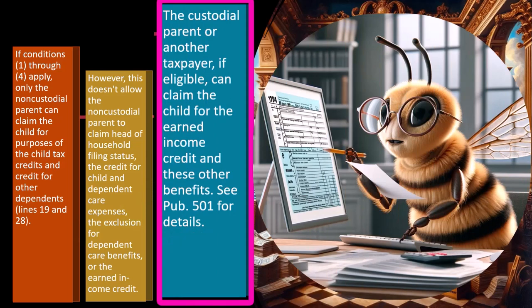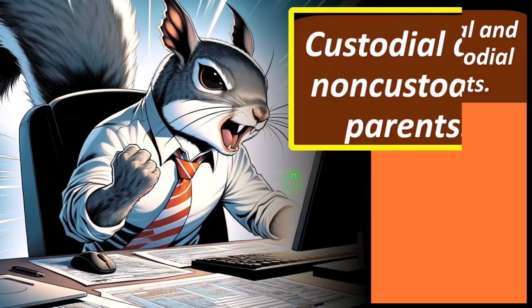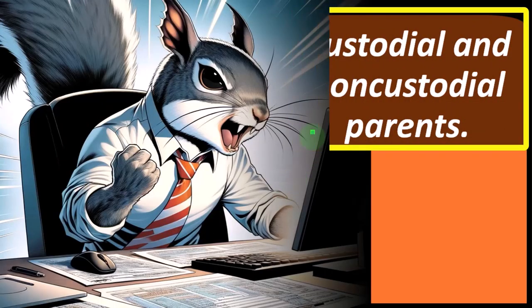The custodial parent, or another taxpayer if eligible, can claim the child for the earned income credit. That's an interesting situation because the one that's taking care of the child might still want the child claimed for the earned income credit. Even if they don't have any income, that could be a significant benefit — they won't be paying tax, but could participate in a welfare-type benefit program. If this is a situation you're in, you can take a look at Publication 501 to drill down on more detail.